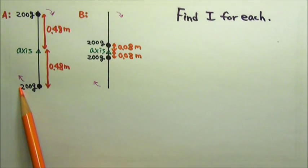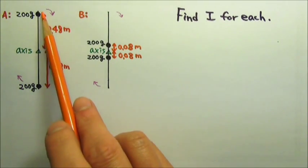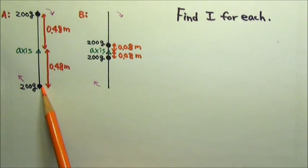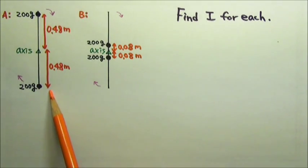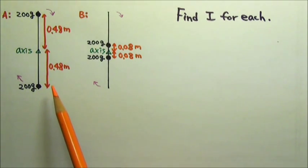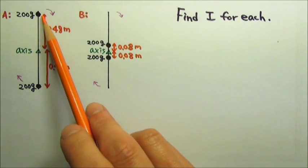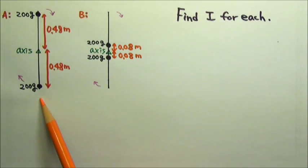Let's look at A first. We can treat each of these 200-gram weights as a point mass. So there are two point masses in this system. When we want to find the total mass of the system, we would add the masses together to get the total. It's the same way for rotational inertia. If we want the total rotational inertia of a system, we can just add up the rotational inertia of each mass in the system.